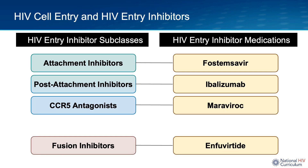There are four FDA-approved HIV entry inhibitors: Fostemsevir, Ibalizumab, Maraviroc, and Enfuvirtide. There is one HIV entry inhibitor medication for each of the four entry inhibitor subclasses.